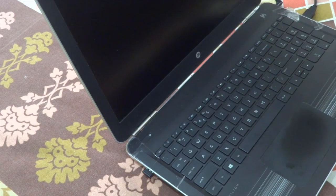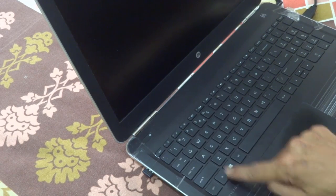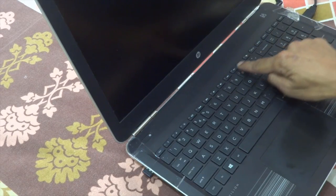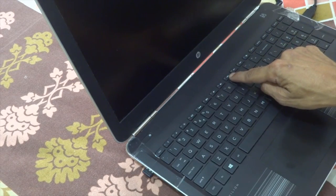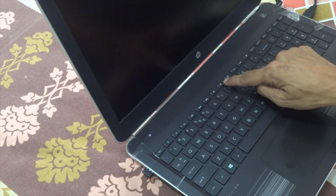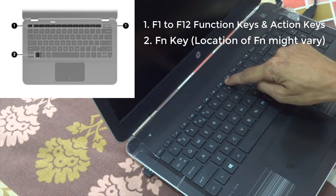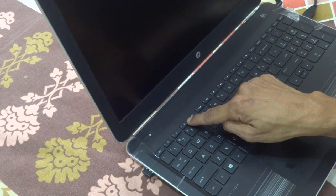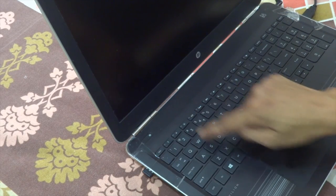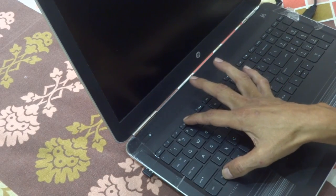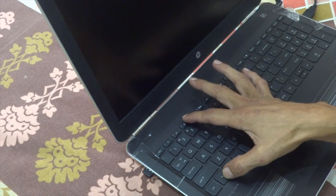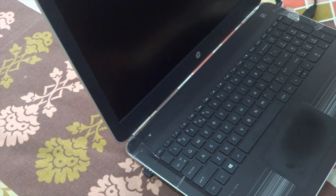In this tutorial, we will talk about the Fn key and the action keys that you can see on top of the F1 to F12 keys, which are the secondary action keys. For example, on the F8 key you also have the volume up button, and on F3 you can increase the brightness. However, you have to use the Fn key along with the function keys to use the secondary action.